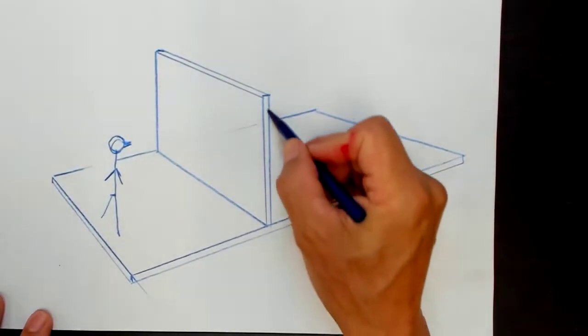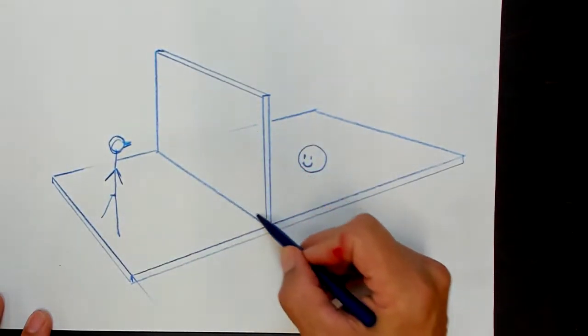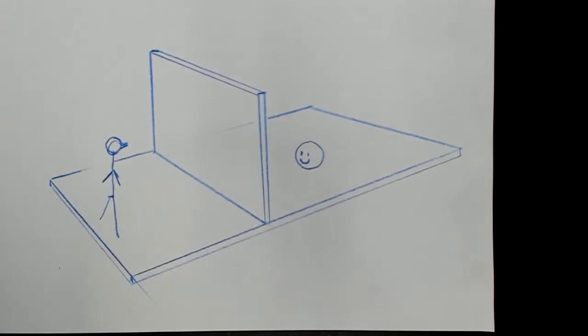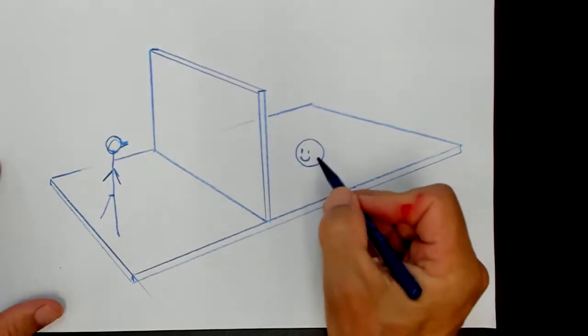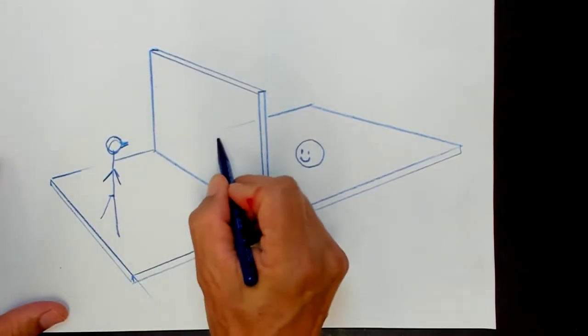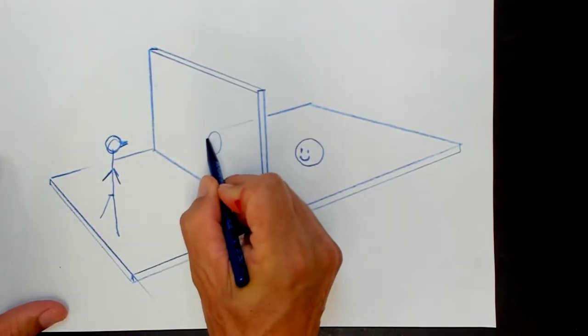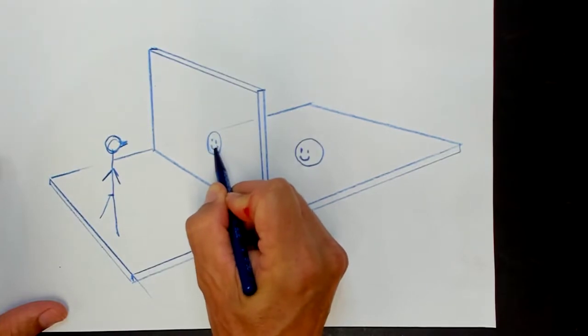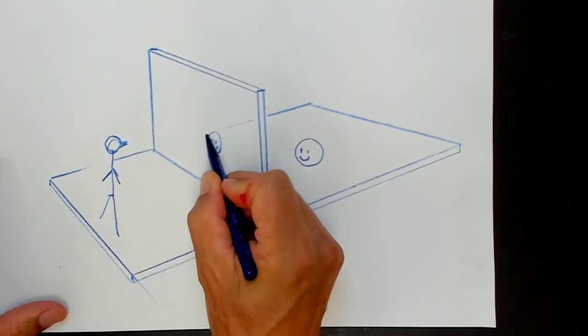This concept of this invisible plane in space between you and the world is what the picture plane is. If this person drew this, traced it on this piece of glass, they would have an image that looks like that. A perfect drawing.